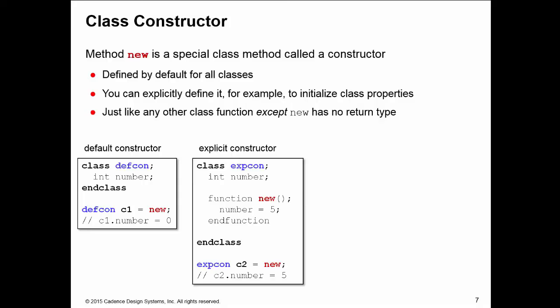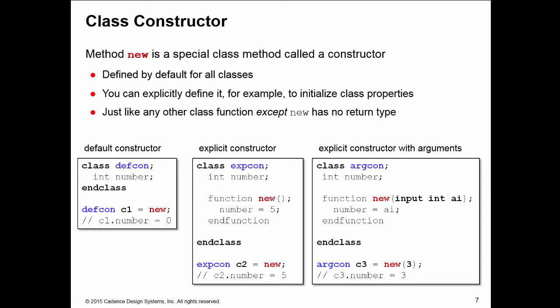In the class EPSCON, we're using this to hardwire the value of number to be a starting value of five. If we wanted to, we could pass in arguments to that constructor. In our class example argcon, I have an argument to the constructor ai of type int, which means every time I call the constructor I must now pass in a value. Here I'm using it to set the initial value of the number property of the c3 instance of argcon to be equal to three, and you could also use a default value if you wanted for that argument.